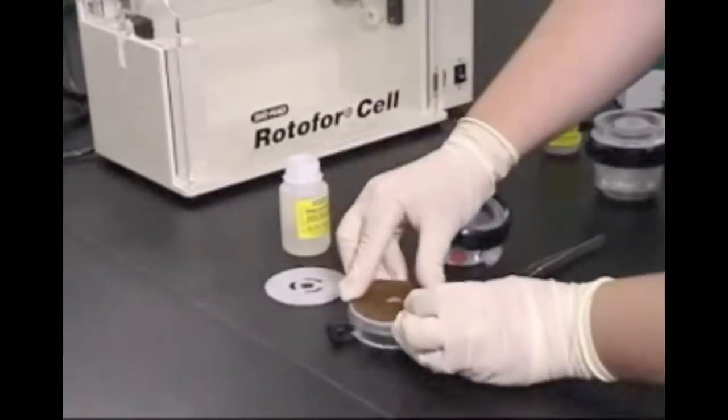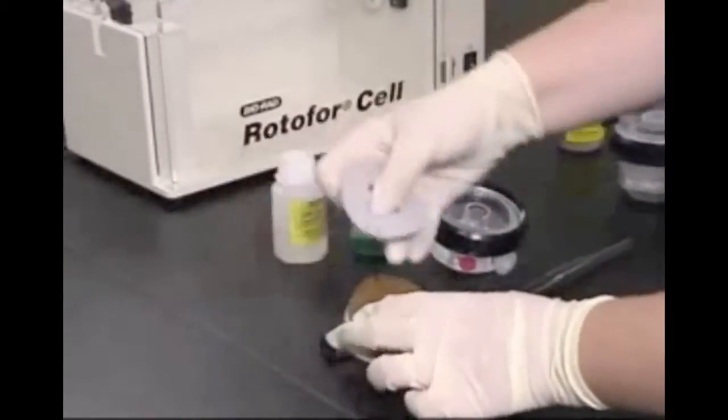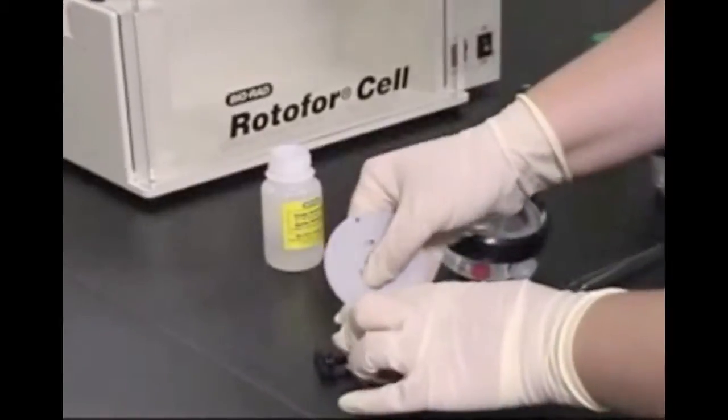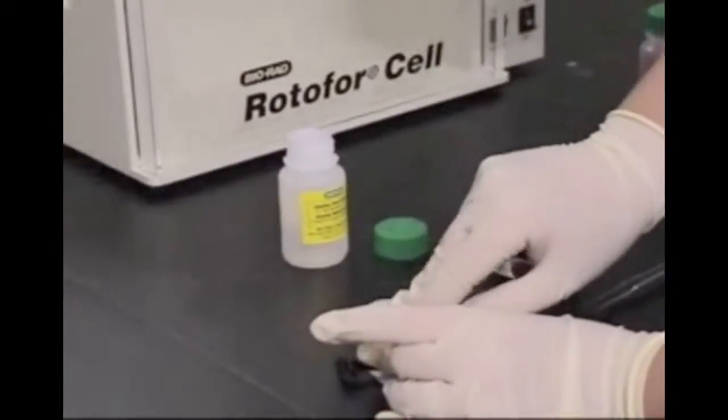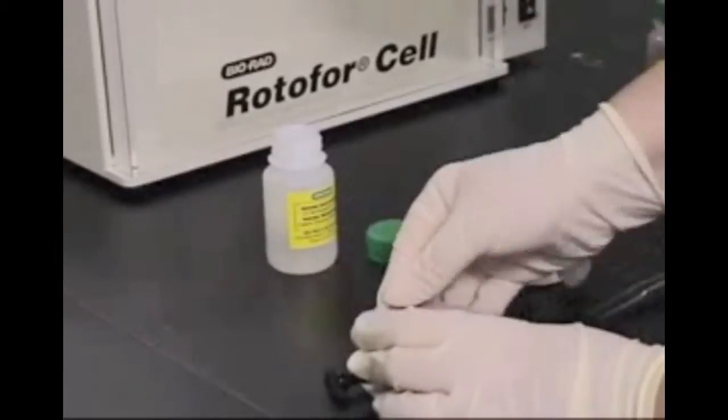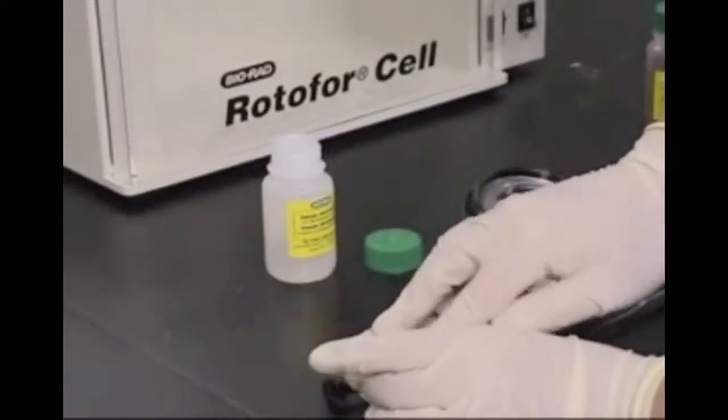Place the cation exchange membrane on top of the gray gasket by aligning the notches on the membrane with the pins on the inner electrode compartment. Carefully cover the membrane with the other gray gasket and refasten the halves of the electrode assembly.